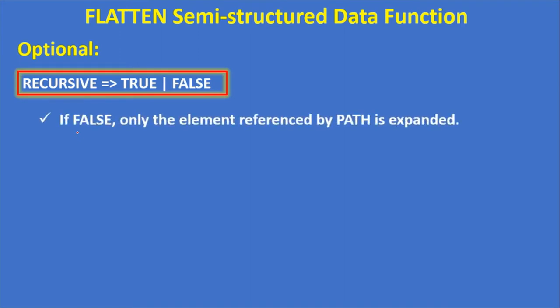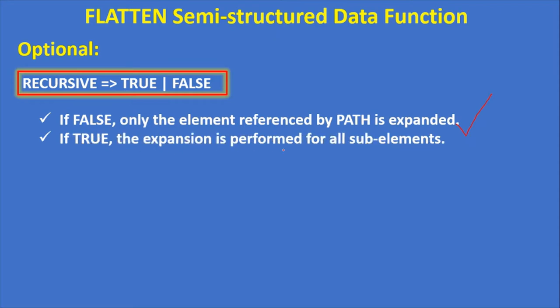The recursive parameter: if false (the default), only the element referenced by path is expanded. If you specify a path, only up to that path will be expanded. If recursive is set to true, the expansion is performed for all sub-elements within the path. Default is false.